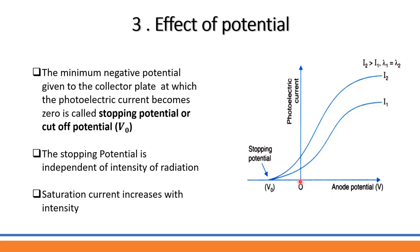When the collector plate is given a negative potential, it repels the electrons since both are negatively charged. As the negative potential increases, the photoelectric current decreases. The potential at which the photoelectric current becomes zero is called the stopping potential or cut-off potential. Stopping potential is the minimum negative potential given to the collector plate at which the photoelectric current becomes zero.